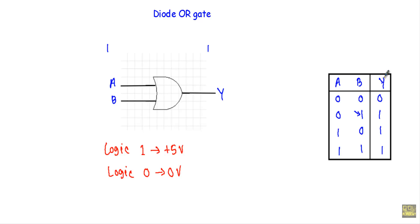When A is at logic 0 and B is at logic 1, we have at least one input at logic 1, therefore our output will be at logic 1. When A is at logic 1 and B is at logic 0, we have at least one input at logic 1, so our output will be at logic 1. For A equal to 1 and B equal to 1, our output will also be at logic 1.